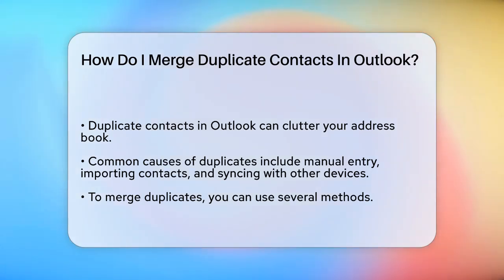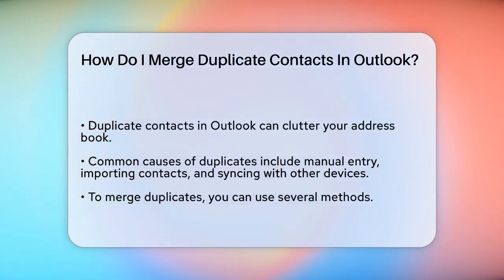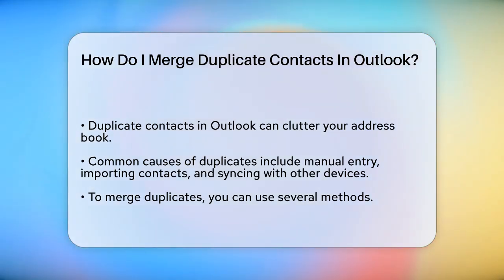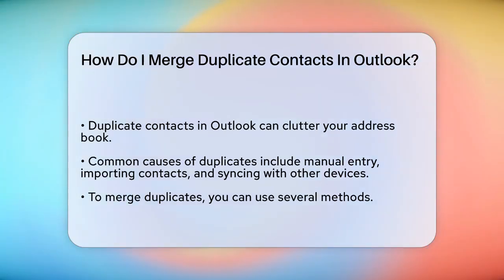First, let's talk about why duplicate contacts happen. This can occur when you create contacts manually, import contacts from other sources, or sync your Outlook with other devices and platforms. For instance, if someone emails you from both their work and personal email addresses, Outlook might create separate contacts for each address.